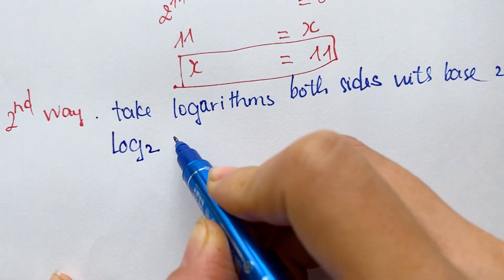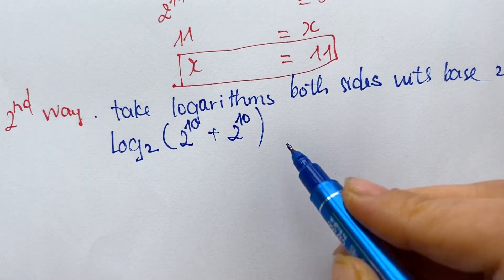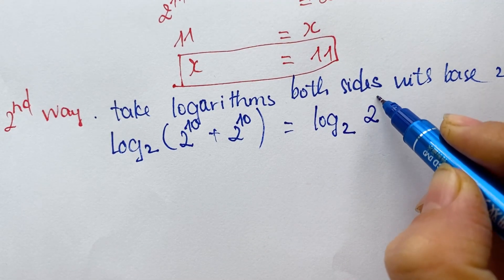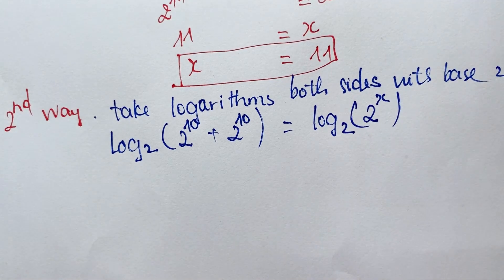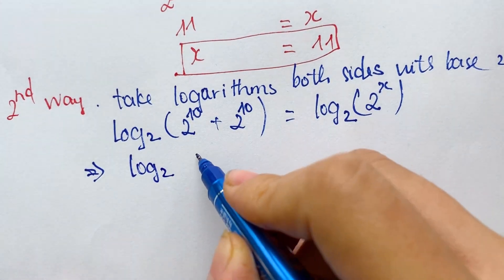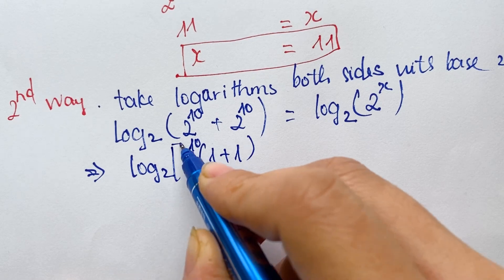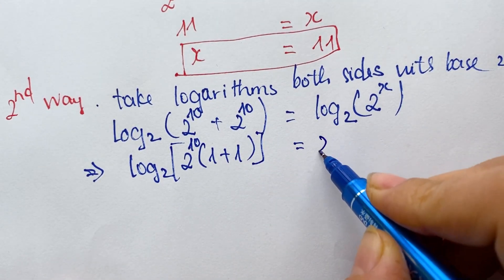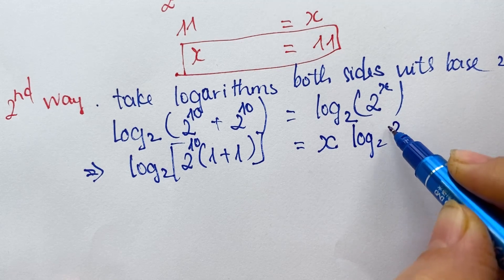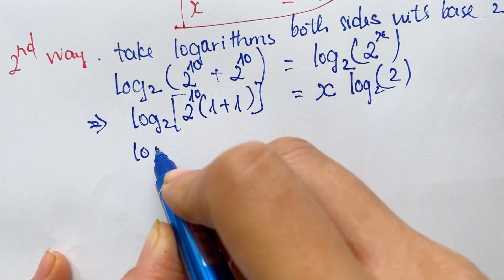So we have log base 2 of 2 power 10 plus log base 2 of 2 power 10, which equals log base 2 of 2 power x. Since log base 2 of 2 power 10 is a common factor, we factor out to get 1 plus 1 in brackets, times x times log base 2 of 2.